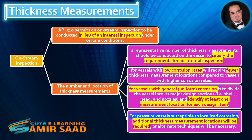Vessels with low corrosion rates will require fewer thickness measurement locations compared to vessels with higher corrosion rates. For vessels with general uniform corrosion, divide the vessel into its major design sections — shell, head, and nozzles — and identify at least one measurement location for each design item. For pressure vessels susceptible to localized corrosion, additional thickness measurement locations will be required, or alternate techniques will be necessary.